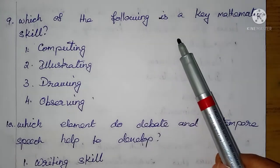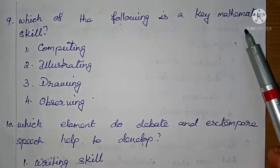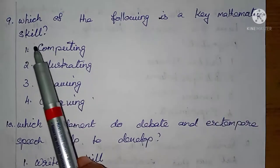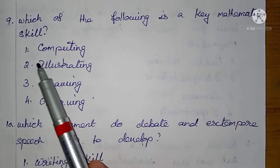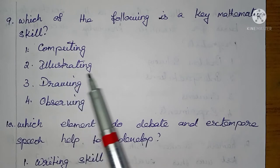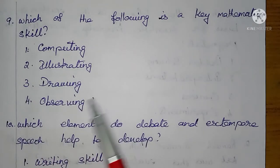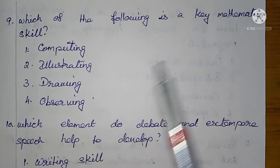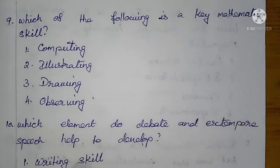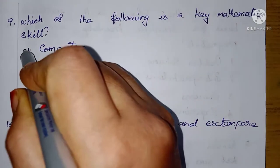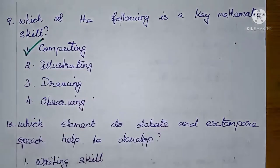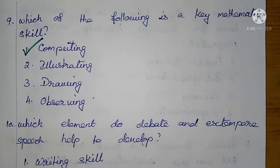Which of the following is a Mathematics skill? 1. Computing, 2. Illustrating, 3. Drawing, 4. Observing. Mathematical skill involves a step-by-step process, so option 1, Computing, is the right answer.